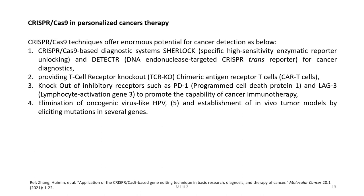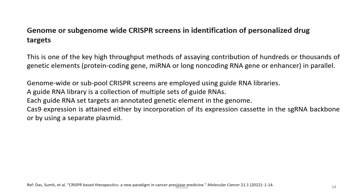CRISPR-Cas9 applications include a diagnostic system — SHERLOCK (Specific High-sensitivity Enzymatic Reporter unLOCKing) and DETECTR (DNA Endonuclease Targeted CRISPR Trans Reporter) for cancer diagnostics — as well as providing T cell receptor knockout (TCRKO) chimeric antigen receptor T cells (CAR-T cells). Other applications include knockout of inhibitory receptors such as PD-1 (Programmed Cell Death Protein 1) and LAG-3 (Lymphocyte Activation Gene 3) to promote cancer immunotherapy, elimination of oncogenic viruses like HPV, establishment of in vivo tumor models, and genome or sub-genome-wide CRISPR screens for identification of personalized drug targets.